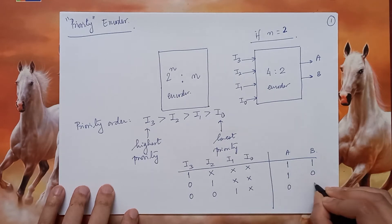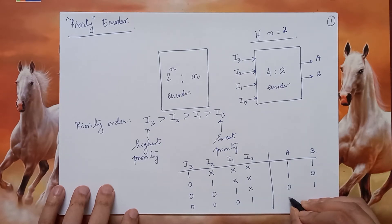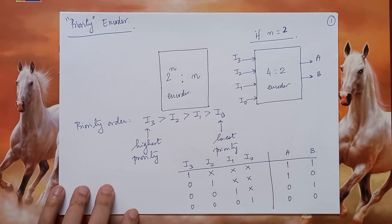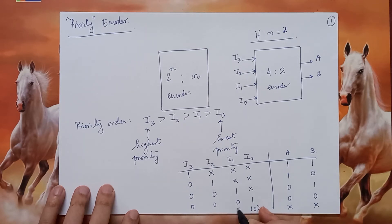Finally, when all the previous three are 0, I0 will be considered if it is 1, and A and B will be 0,0. Now if all inputs are 0, then A and B will be don't cares. This is how the priority encoder works.